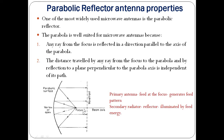The feed acts as a primary antenna, placed at the focus, and it generates a feed pattern. The parabolic surface acts as a secondary antenna or secondary radiator — it reflects the rays illuminated by the feed. This is the basic property of the parabolic reflector. How to shape the secondary beam after reflection from the parabolic surface is the big challenge.